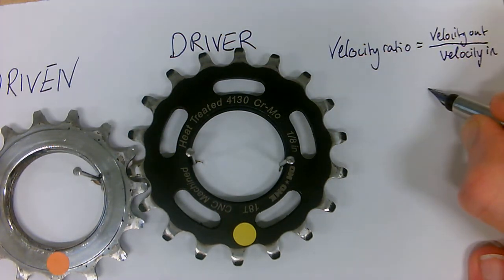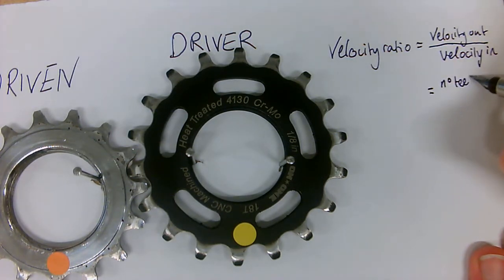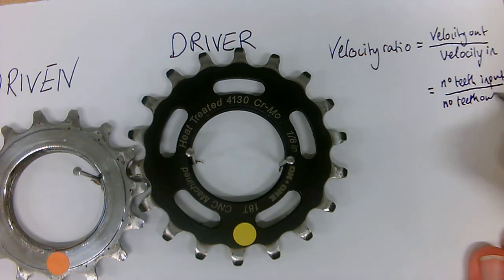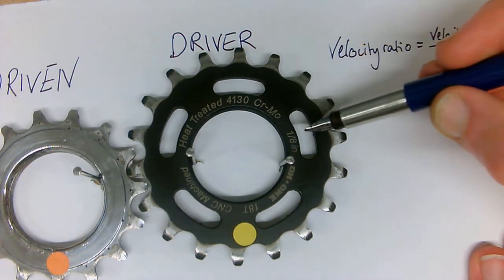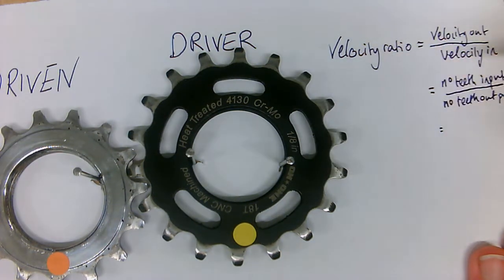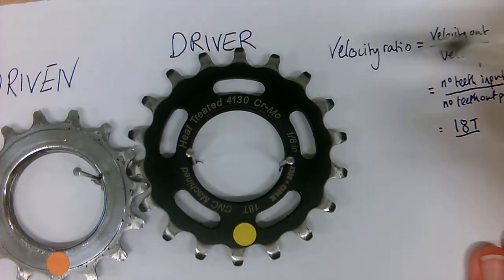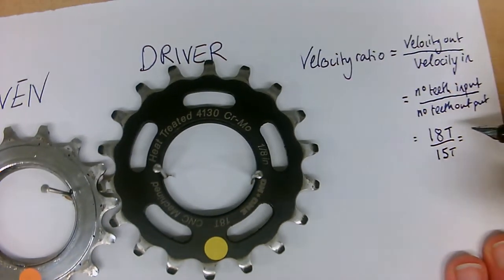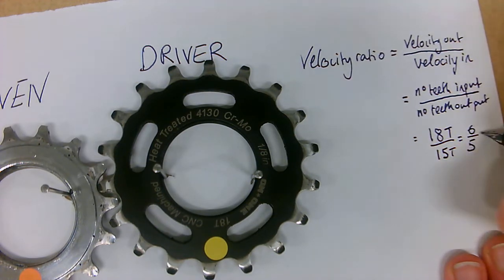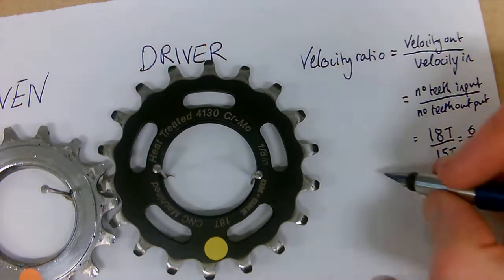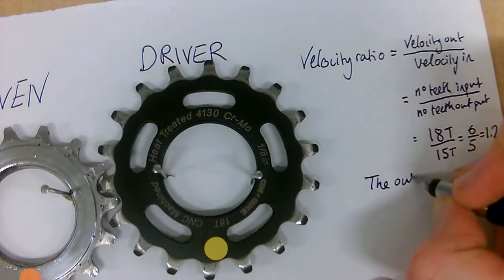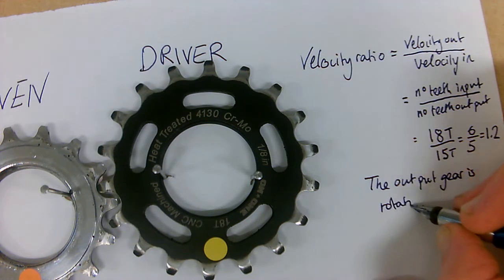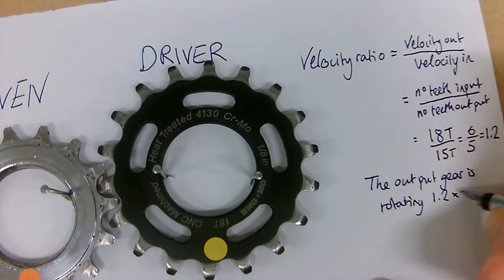Now we can get our velocity ratio by looking at the number of teeth on the input gear divided by the number of teeth on the output gear. The number of teeth on this large gear we've used for our input here is 18. So 18 teeth, the number of teeth on this small gear is 15 which gives us a ratio of 6 over 5 or 1.2. That tells us that our output gear is rotating 1.2 times faster.